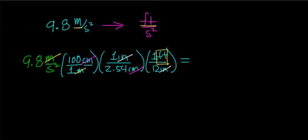And notice that I have not changed the unit of time, which is second squared. And when I multiply this out in my calculator, the number that I get is 32.2 feet per second squared, or 32 feet per second per second.